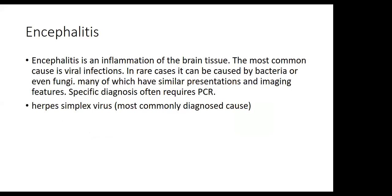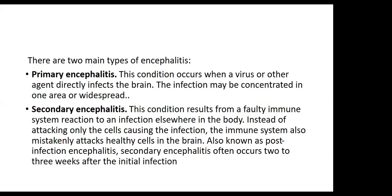Encephalitis is an inflammation of the brain tissue; the most common cause is viral infections. In rare cases, it can be caused by bacteria or even fungi, many of which have similar presentation and imaging features. Specific diagnosis requires PCR. There are two main types: primary encephalitis, which occurs when a virus or other agent directly infects the brain — the infection may be focal or widespread.